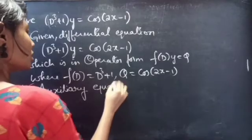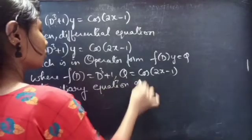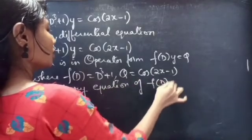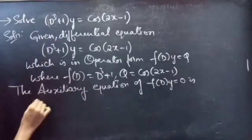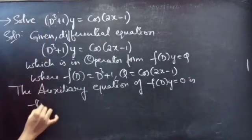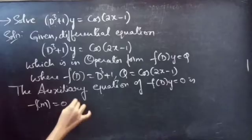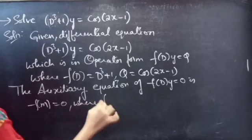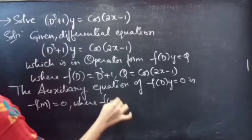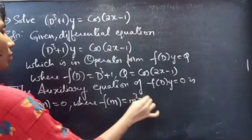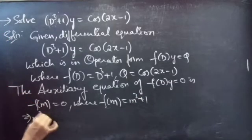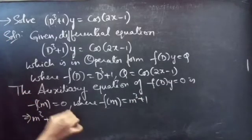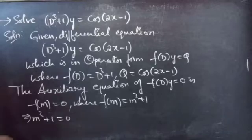Let's find the complementary function using the auxiliary equation of f(D)·y = 0. The auxiliary equation is f(m) = 0, where f(m) = m³ + 1. So our auxiliary equation becomes m³ + 1 = 0. We can find the roots using the synthetic division method.